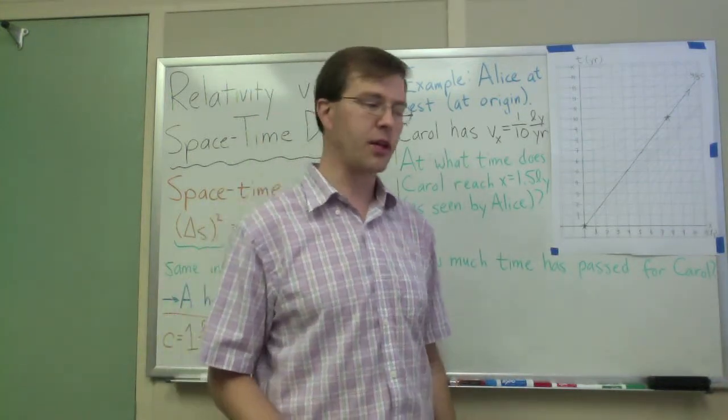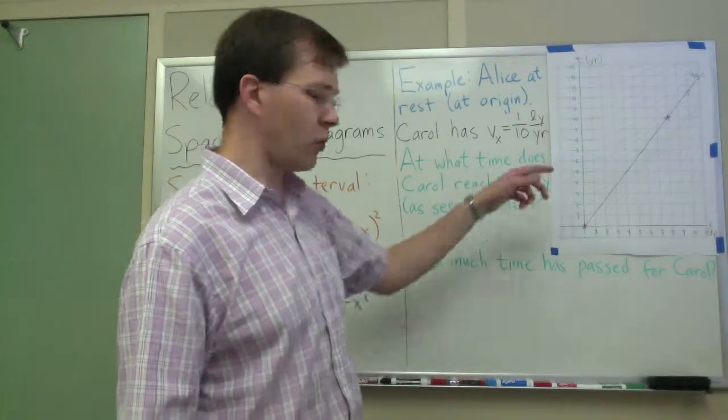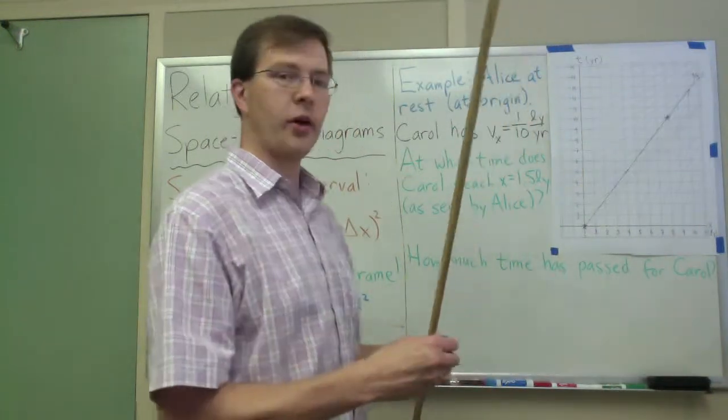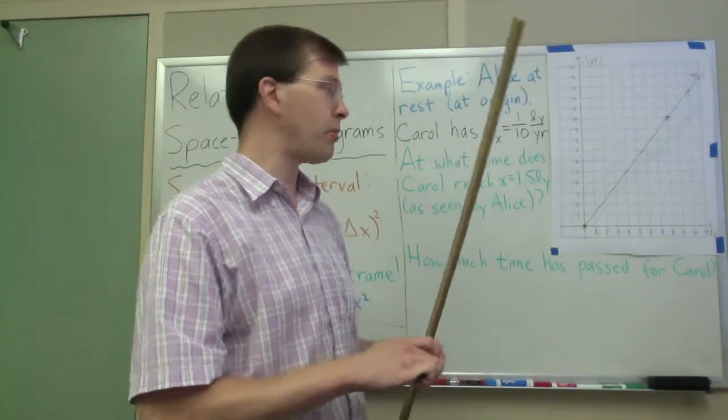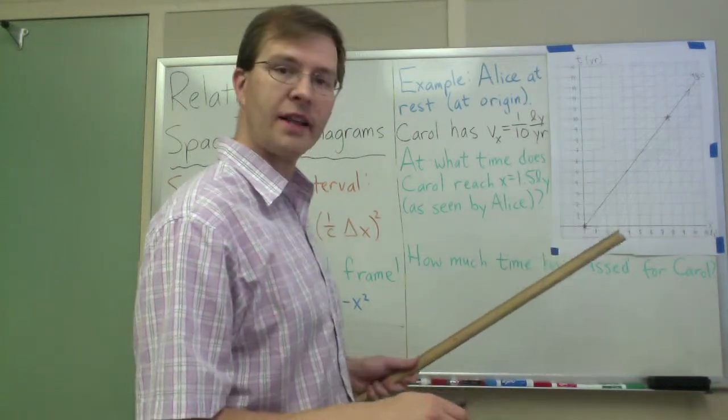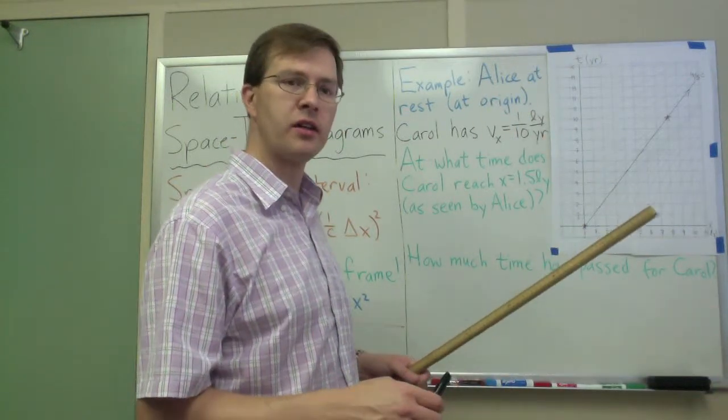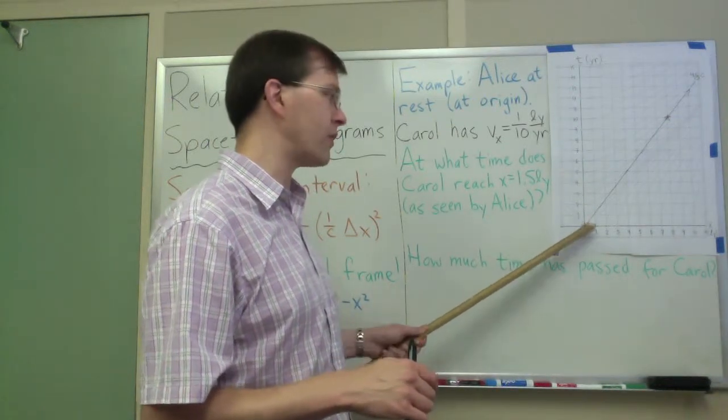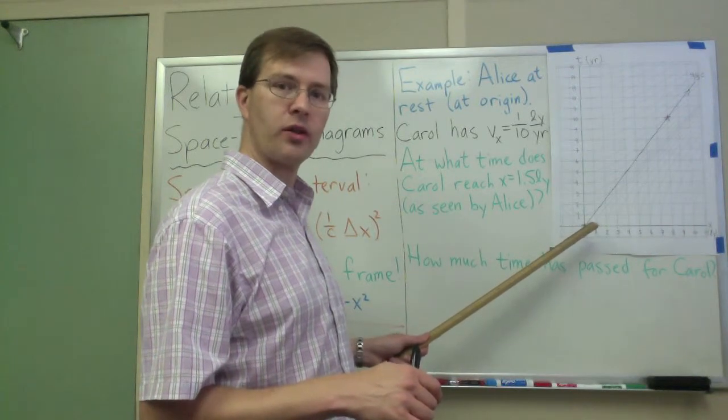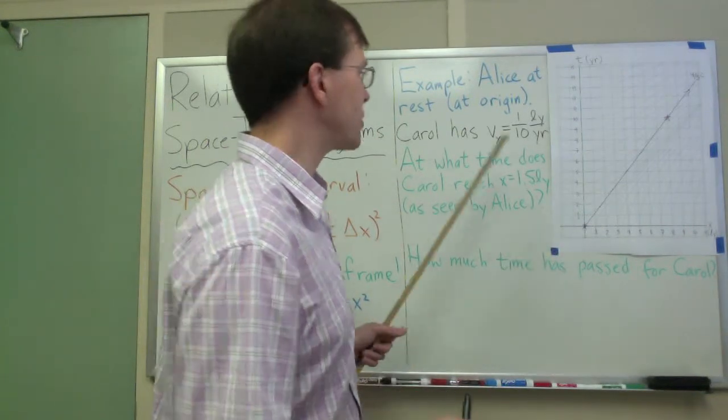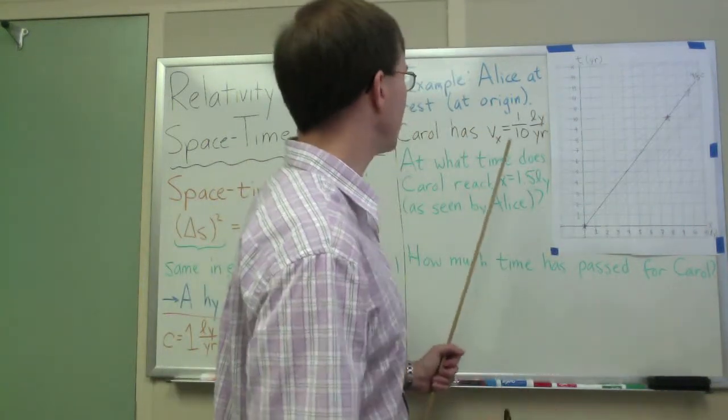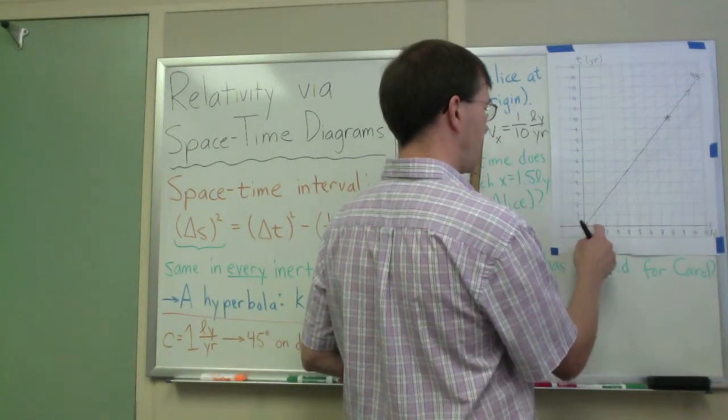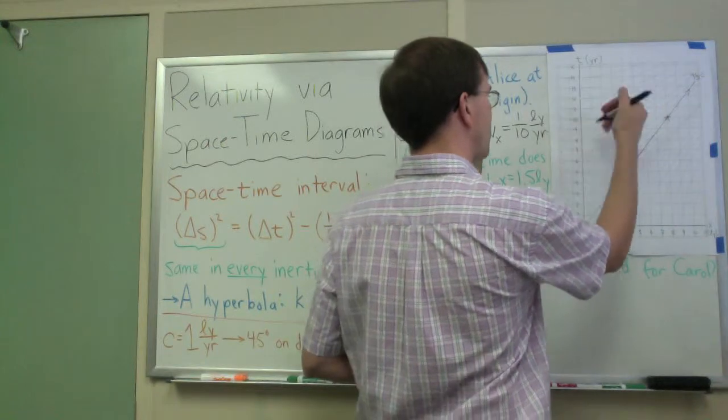Carol's moving at one-tenth light year per year. If I want to show her path on here, I'd better find where she's going. Carol is also going to depart from the same departure event at the origin - that's how we're defining the origin. Using this hyperbola graph paper, you always want to have the beginning of your event be at the origin or else the paper doesn't work. So she's moving at one-tenth light years per year. That means to get one light year, she has to spend ten years doing it.